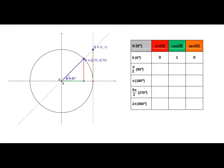Now we move our way around the circle towards the next point that we clearly know the coordinates of. So we're looking at when the angle is 90 degrees or pi on 2 radians.